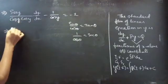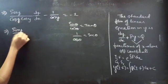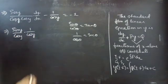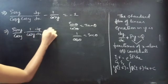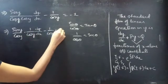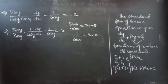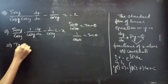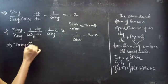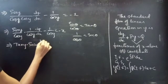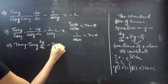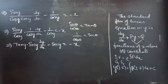Writing sin y / cos y as tan y and 1/cos y as sec y using trigonometric identities, we get: tan y · sec y · (dy/dx) − sec y = −x.